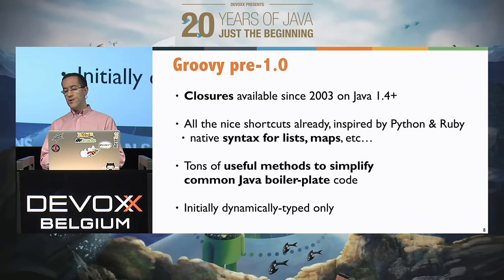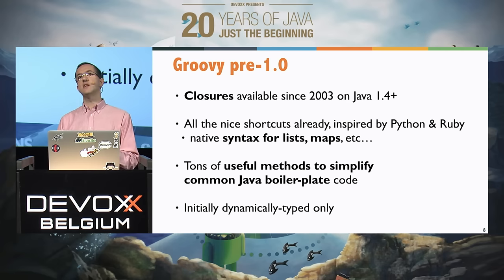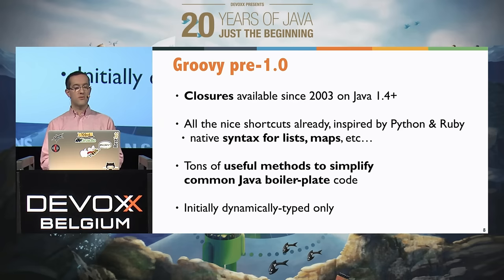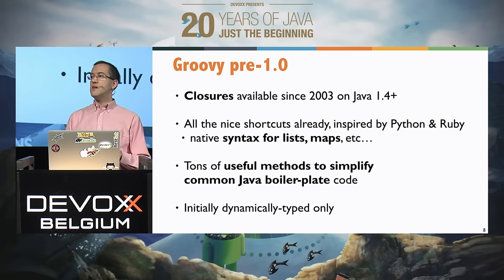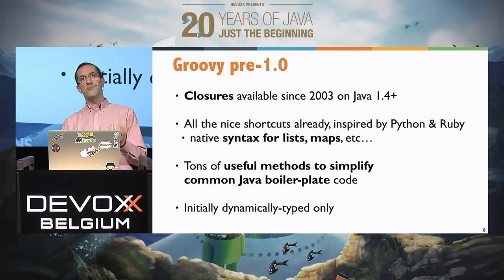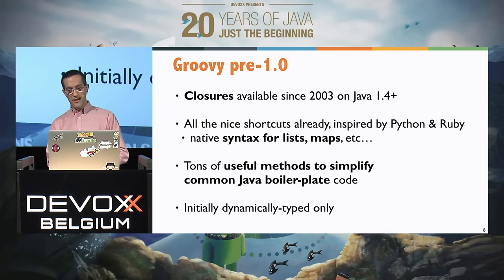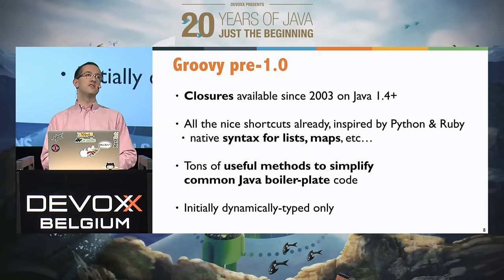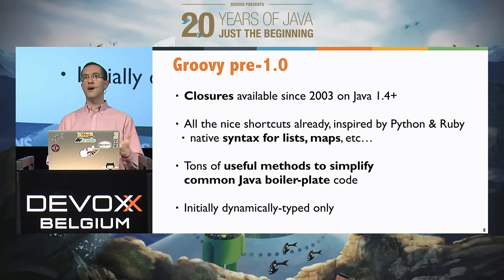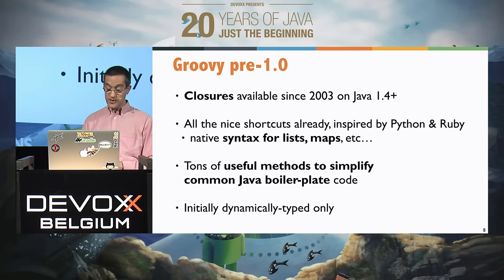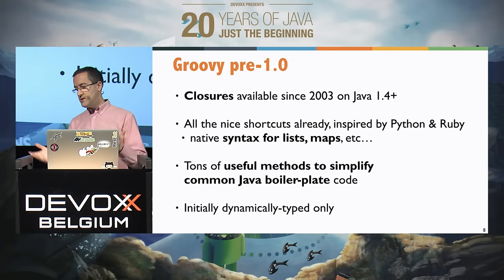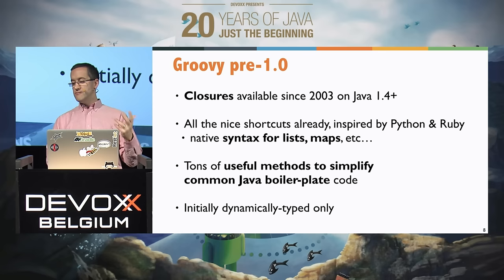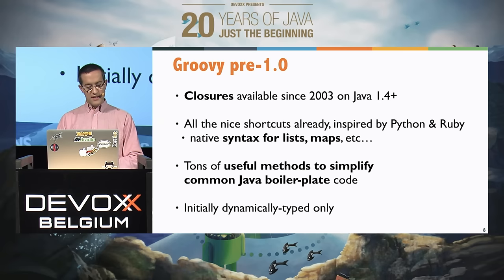The inspiration came from Python, Ruby, and Smalltalk. In terms of syntax, that was actually the Java syntax that we derived into a new grammar. It's copy-and-paste compatible — about 95% of Java code is also valid Groovy code because of how we derived the Groovy syntax from the Java syntax. On top of that, we added tons of useful methods to simplify the Java code base and add missing methods to JDK classes.